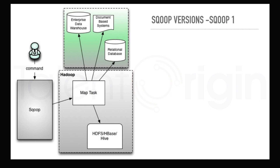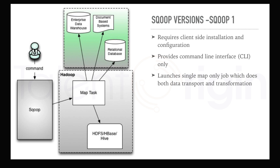Let's discuss Sqoop 1. Sqoop 1 requires client-side installation and configuration, and provides only a command-line interface. Sqoop 1 provides only one mapper job which takes care of both transportation and transformations — both things are performed by a single map job.